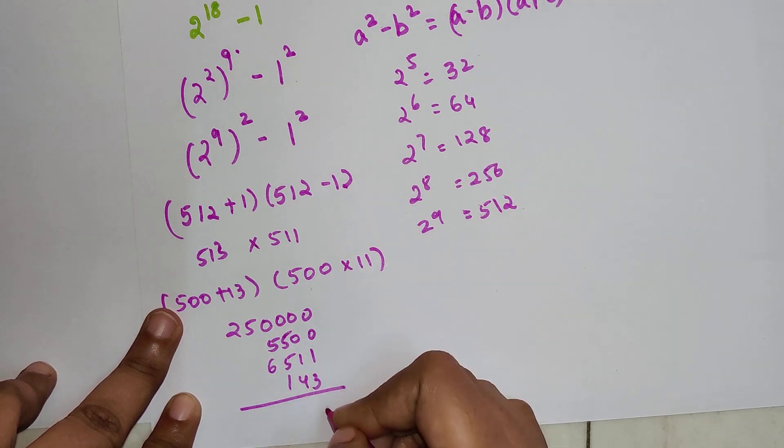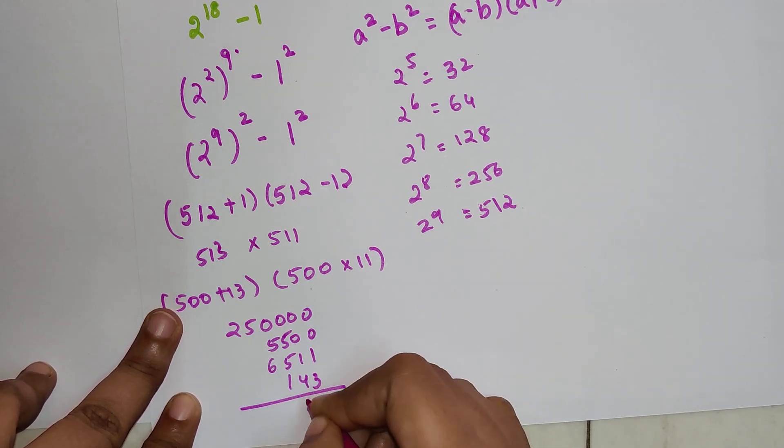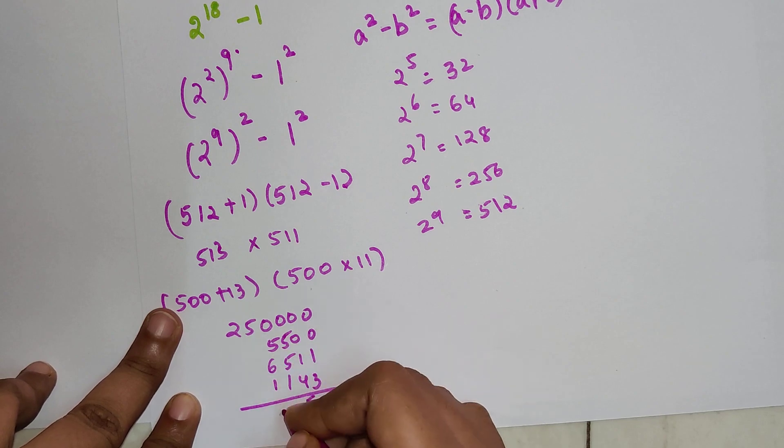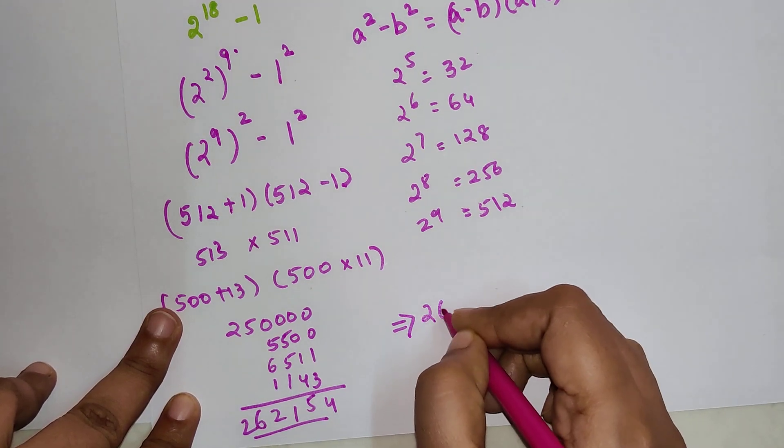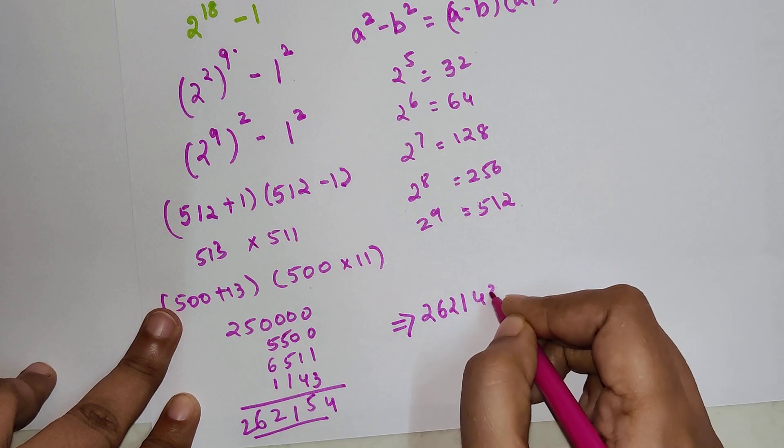All you have to do is just add. So 4, this is 5, this is 11, this is 1 carry, so 12, 1 carry, 6 and 2. So the final answer for this one is nothing but 2,62,143.